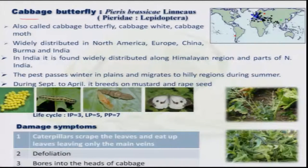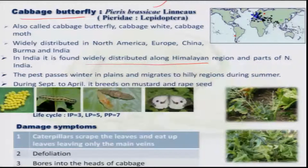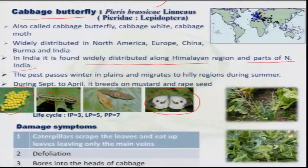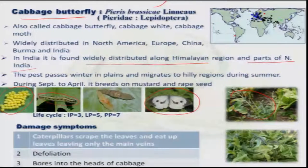The cabbage butterfly, Pieris brassicae, is quite serious in northern India, usually distributed along the Himalayan region and parts of north India. This butterfly pest is whitish in color with black spots on its four wings and lays eggs in groups that are yellowish. The larvae are medium to large with black and white patches, and they mainly defoliate the plant, causing skeletonization, poor head development, and sometimes attacking the head region directly.